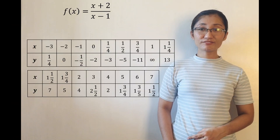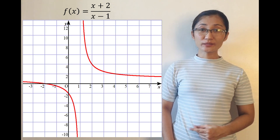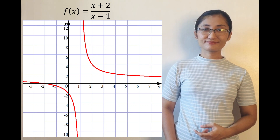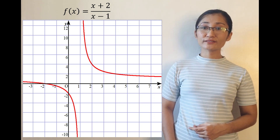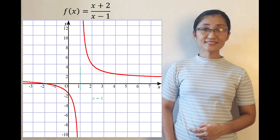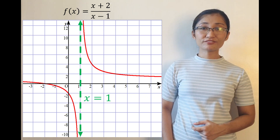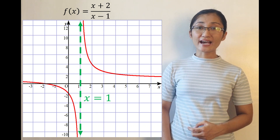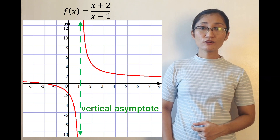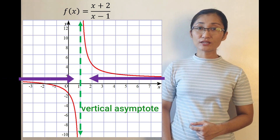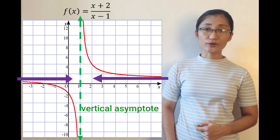By constructing a table of values, this is what you will get, and this will be the graph. The collective x values are all real numbers except for x equals 1. There is no point in the graph which has abscissa 1, denoted by the vertical broken line called the vertical asymptote. The graph only approaches positive 1 from the left and from the right, but does not touch it.